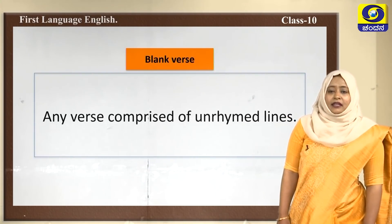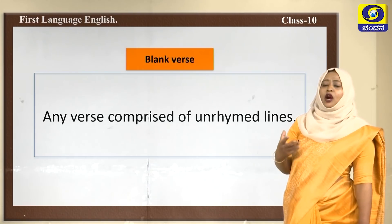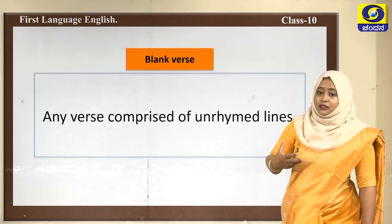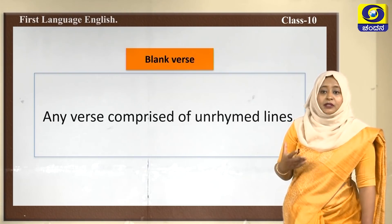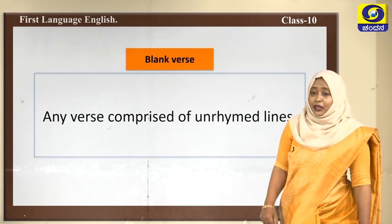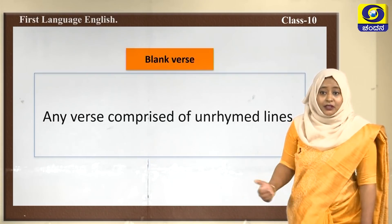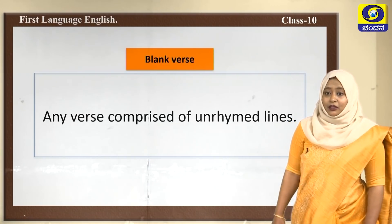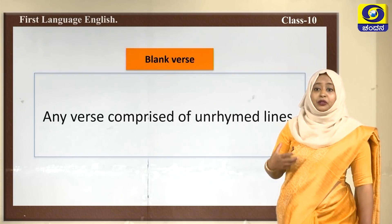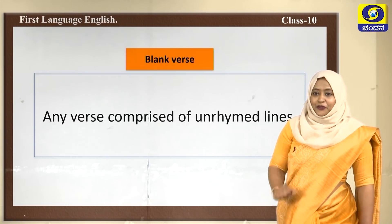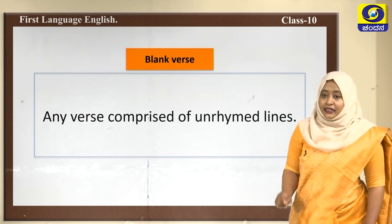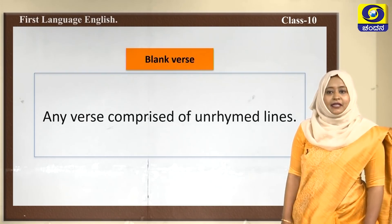The first one is blank verse. Blank verse is comprised of unrhymed lines. From the time we started going to school we have been learning rhymes — like Twinkle Twinkle Little Star and Johnny Johnny Yes Papa — which are musical and rhythmic. But there are poems that are not rhythmic, with unrhymed lines, and these types of poems are called blank verses.